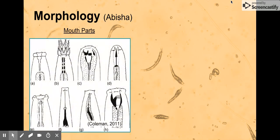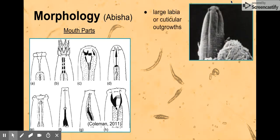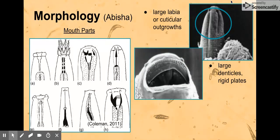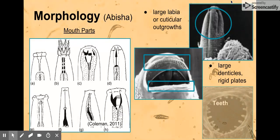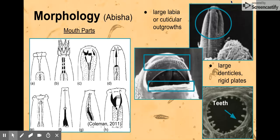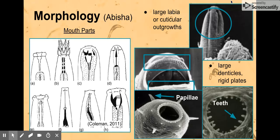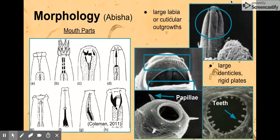Nematodes are super adaptable and can have a variety of mouth parts. We'll start with the large cuticular outgrowth, or alabia — these big foldings. They can also have large denticles, which are rigid plates that help with crushing or biting. Teeth similarly are good for crushing and biting. And then there are papillae, which are chemoreceptors — chemical receptors — that help the nematode detect what chemicals are in the area.